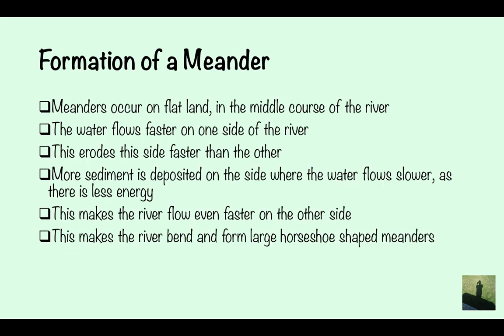Formation of a meander: Meanders occur on flat land in the middle course of a river. The water flows faster on one side of the river. This erodes this side faster than the other. More sediment is deposited on the side where the water flows slower as there is less energy. This makes the river flow even faster on the other side. This makes the river bend and forms large horseshoe shaped meanders.